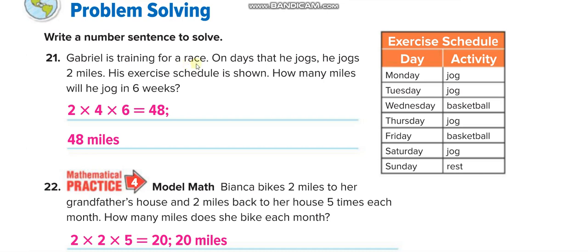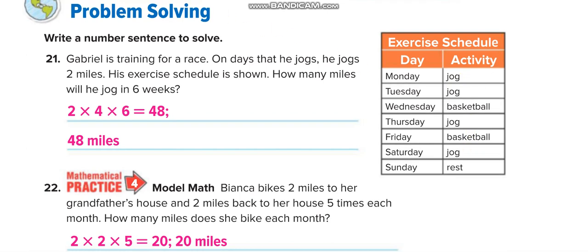Gabriel is training for a race. On days that he jogs, he jogs two miles. His exercise schedule shows he jogs four days per week. So in one week: four times two. Over six weeks: four times two times six equals forty-eight miles.